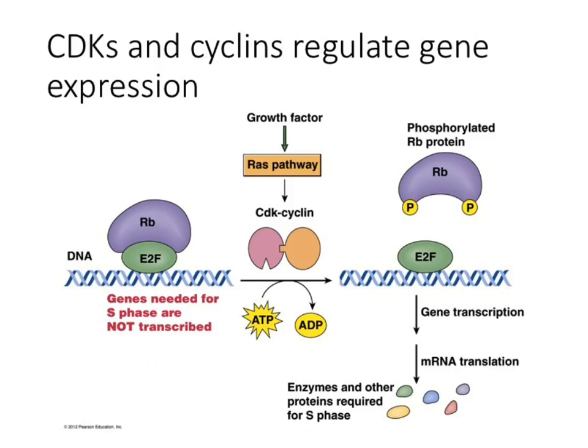Two main players in this process. The major one is PRB, or retinoblastoma protein. Retinoblastoma is what we describe as a tumor suppressor, and most tumor suppressors function to halt or block cell cycling. RB is a target for cyclin-dependent kinases and is normally found as a nuclear protein bound to a transcription factor known as E2F.